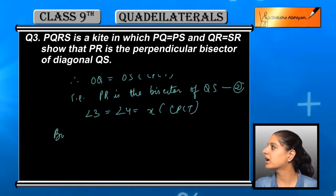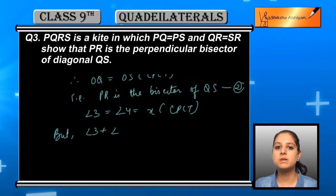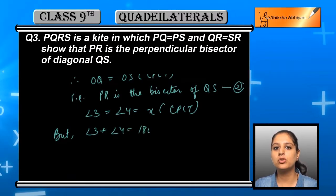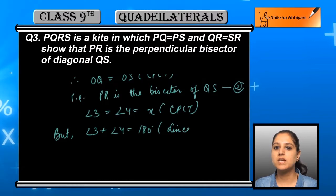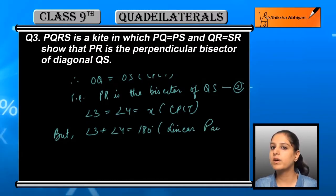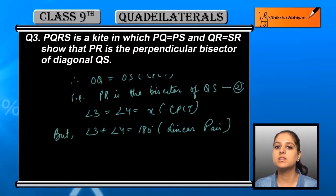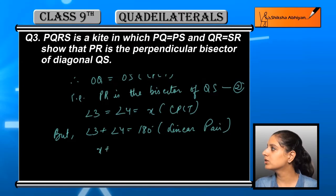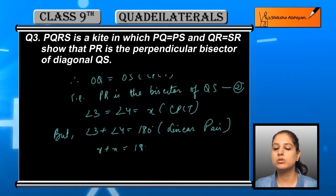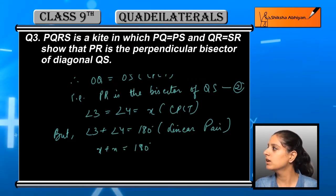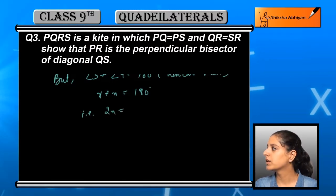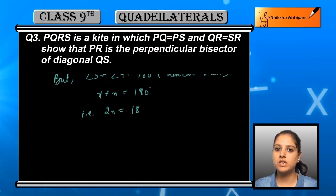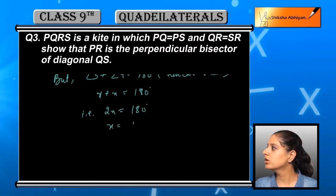Now we need to prove that PR cuts QS at 90 degrees. Looking at angle 3 and angle 4 by CPCT, these two are equal. If we suppose both equal x, then angle 3 plus angle 4 equals 180 degrees because they form a linear pair. If both are x, then x plus x equals 180 degrees, so 2x equals 180, meaning x equals 90 degrees.